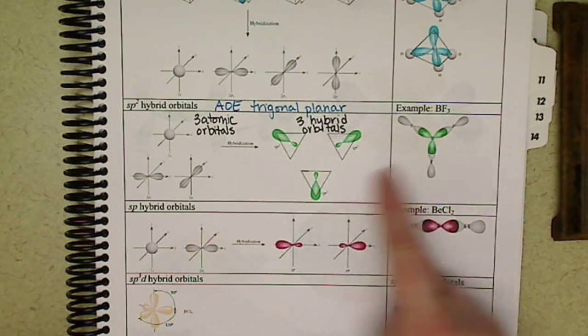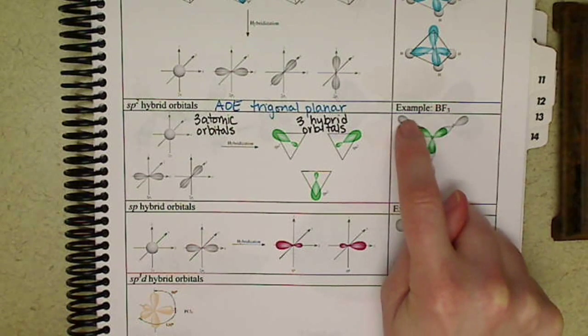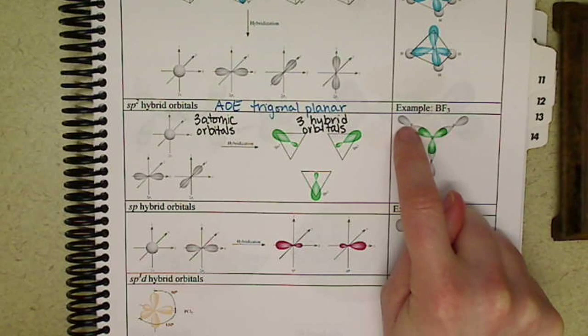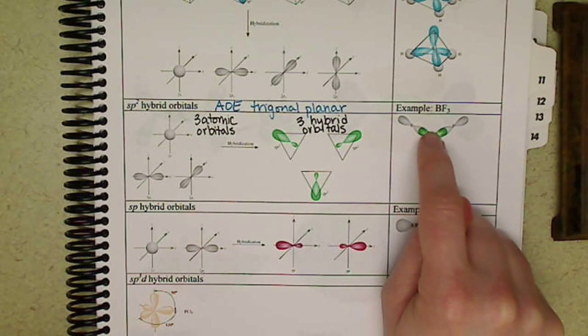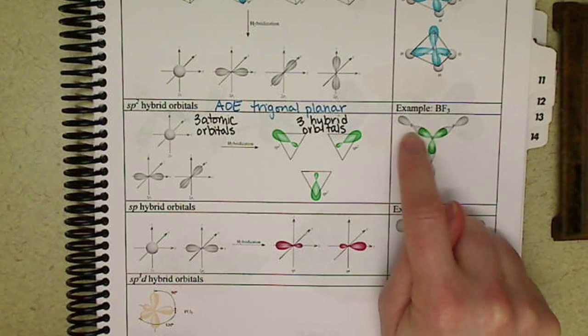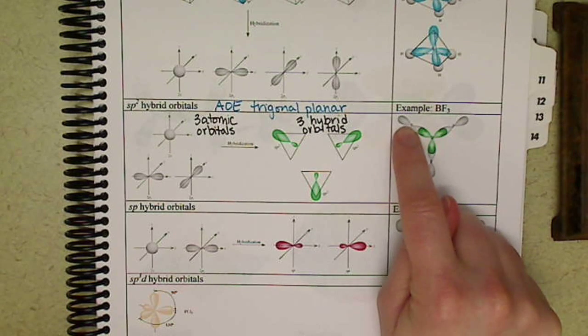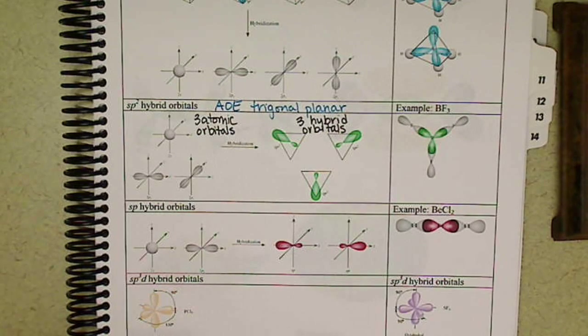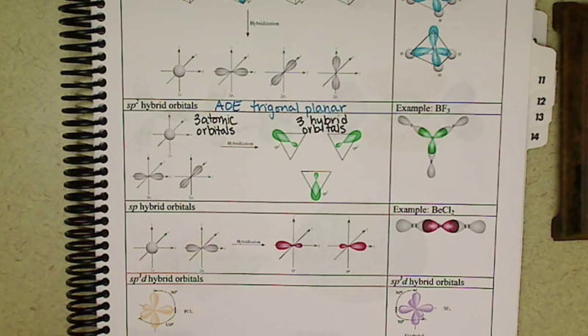So these three orbitals here are put on boron, then the bond that occurs between boron and fluorine, in this case, we have an SP2 hybrid orbital overlapping with one of the P orbitals from fluorine. If we don't need to hybridize, we don't have to hybridize. If we need hybridization to occur, we say hybridization occurs. If we don't need hybridization to occur, say in the example of hydrogen and fluorine molecules, we don't need to hybridize.